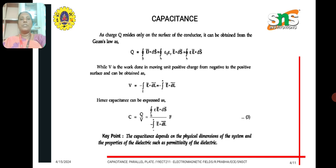The voltage or potential difference is the work done in moving a charge from negative to positive against the electric field. So V = minus the integral from negative to positive of E·dL. By substituting both the Q and V formulas, capacitance C can be written as the closed surface integral of epsilon * E·ds divided by minus the line integral of E·dL. From this formula, we understand that capacitance depends on the physical dimensions of the system and the permittivity of the dielectric medium.